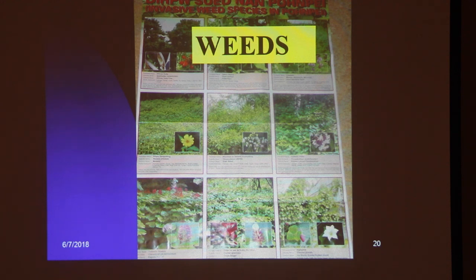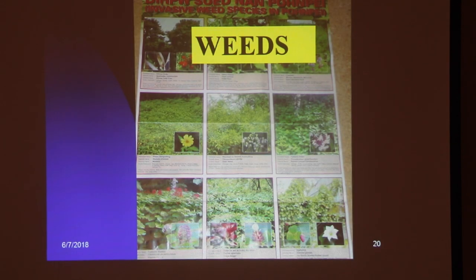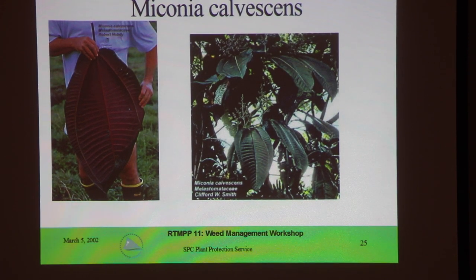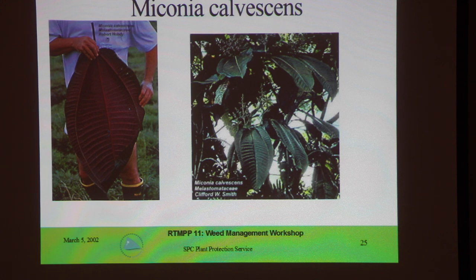There are also many weeds not present in FSM. One I'd like to highlight is Merremia, present in New Caledonia and Papua New Guinea. Its leaves are enormous as you can see in the picture, and it is a very invasive plant. There are many other invasive plants not present here.